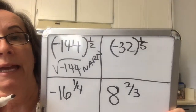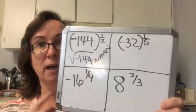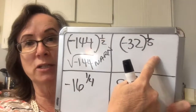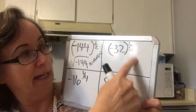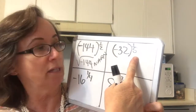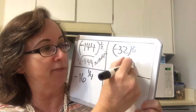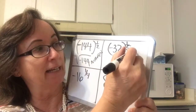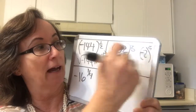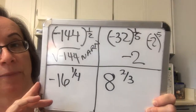Then I have negative 32 to the 1/5 power, which is the fifth root. Since it's an odd root, the negative is no problem. The answer is negative 2, because if I take negative 2 and raise it to the fifth power, I get negative 32. So the answer is negative 2.